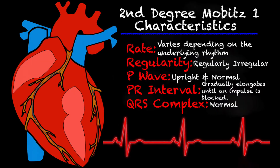Your rate is really going to depend on whatever the underlying rhythm is, but it's typically going to be 60 to 100, mainly because it's still coming from the SA node. The regularity of a second degree Mobitz 1 is that it is a regularly irregular rhythm — it is irregular, but it's not something like AFib where it's just all over the place. You're going to know what to expect because it's regularly irregular.